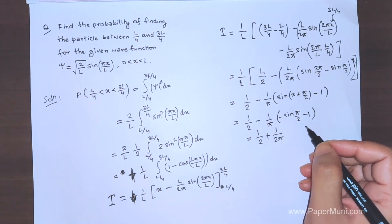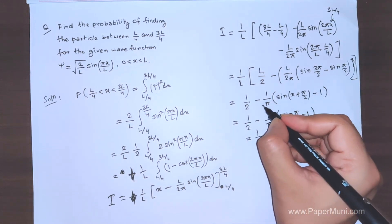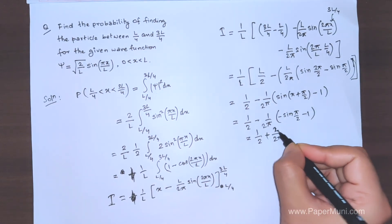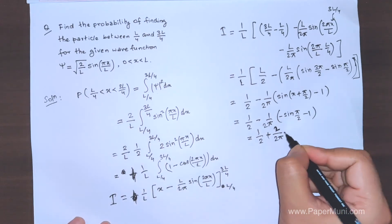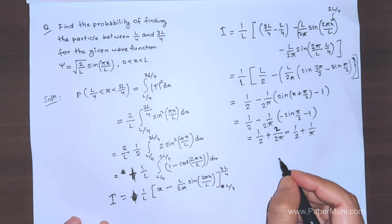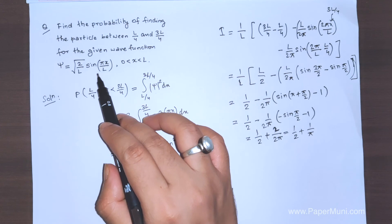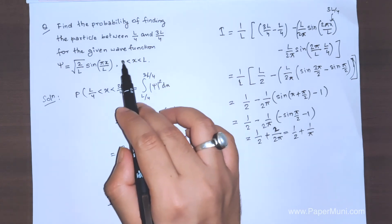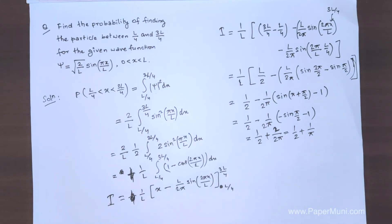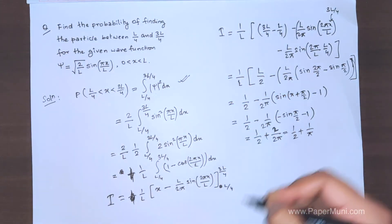There was also a factor of 2 here, so this cancels out correctly, giving us 1/2 + 1/π. So this is the answer. The probability of finding the particle — which has this wave function and is in the ground state of the 1D box — between L/4 and 3L/4 is 1/2 + 1/π. You don't need to memorize the result; the main thing is to understand the method.